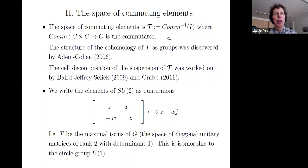So the space of commuting elements is denoted by script T. The cohomology, the structure of the cohomology of this space as groups was discovered by Adem and Cohen. And as I said, the cell decomposition of the suspension was worked out by myself and Paul Selick and Tom Baird, also by Crabb. And we will denote SU(2) by quaternions. So this notation refers to Z and W are complex numbers. Just if you see a complex number and it's supposed to be an SU(2) matrix or a quaternion, this is what we're referring to.